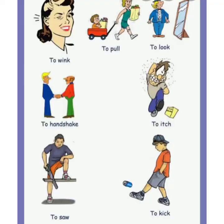Then there is to wink — aank marna. To pull — kisi cheez ko khenchna. To look — kisi ko dekhna. To handshake — kisi se haath milana; it can be any of your friends, relatives, or business partners. To itch means khujli karna. To saw means kisi cheez ko cut karna, especially with a saw — you cut wood for making furniture. To kick — kisi cheez ko lath marna.